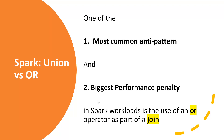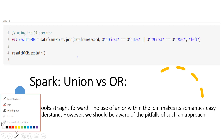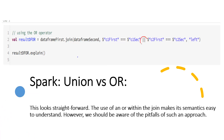So guys, let's start. What we are trying to understand in this particular video is one of the most common anti-patterns and one of the biggest performance penalties seen in Spark workloads — primarily the use of an OR operator as part of a join. Many times we get into a situation where we prefer to write a join using OR on two columns, as in this example joining two data frames.